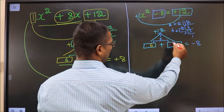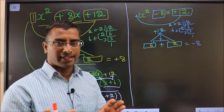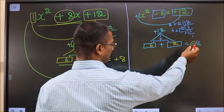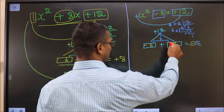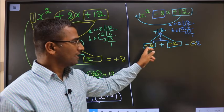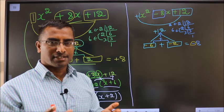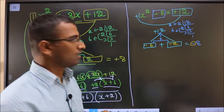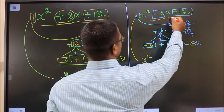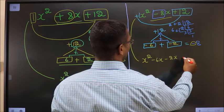So write here 6 and here 2. Now adjust the signs. I should get minus 8 here. I could get minus 8 only if I place minus before both of them. Minus 6 minus 2 is minus 8. Minus 6 into minus 2 is plus 12. So we have adjusted the signs also. Now this will change: in place of minus 8x, I will write minus 6x minus 2x plus 12.